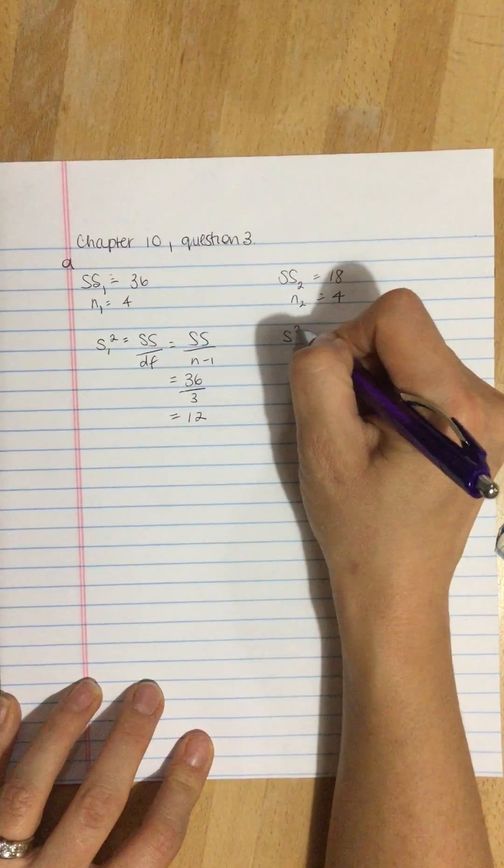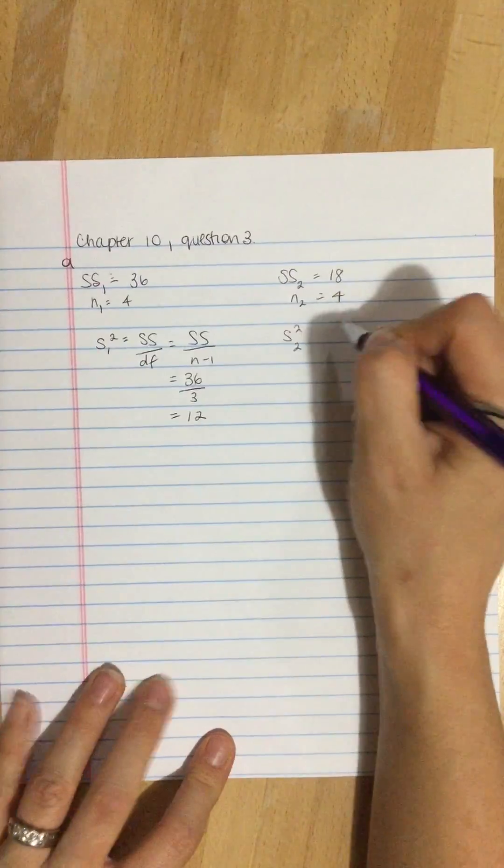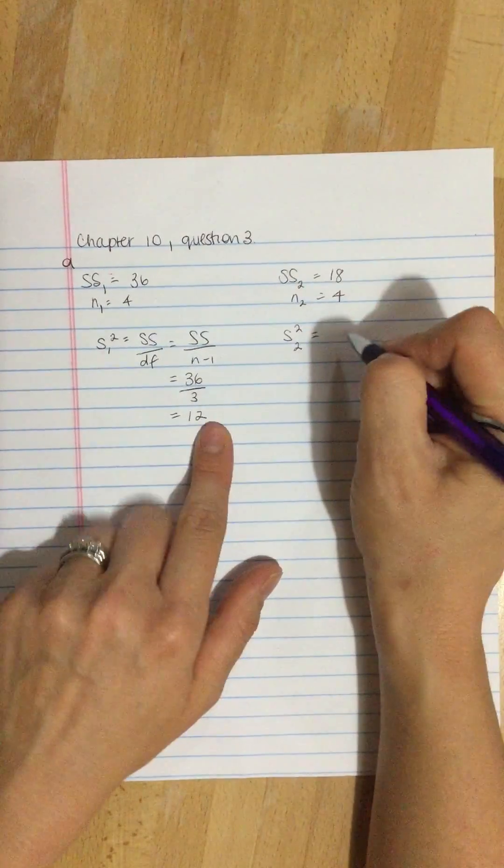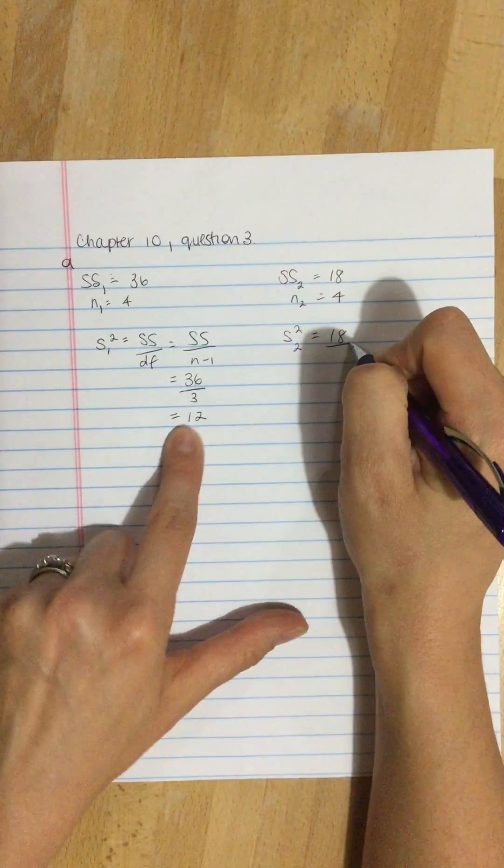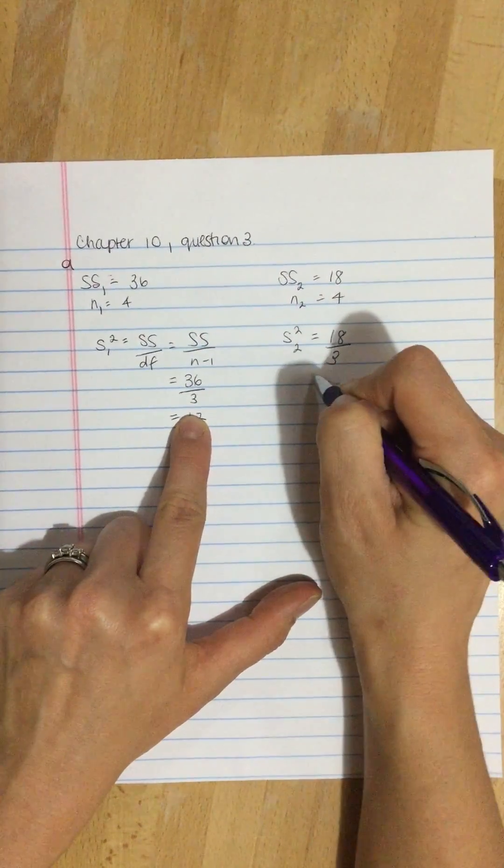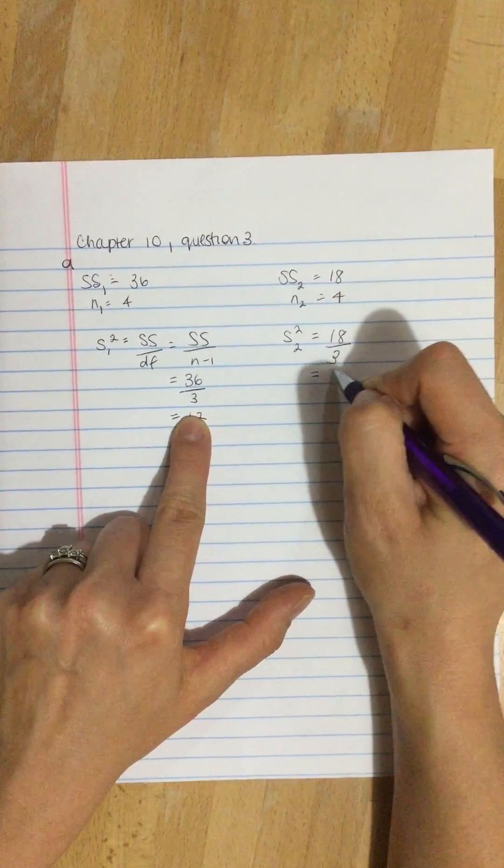The variance of the second, same formula, so 18 divided by, same sample size, divided by 3, and we get 6.